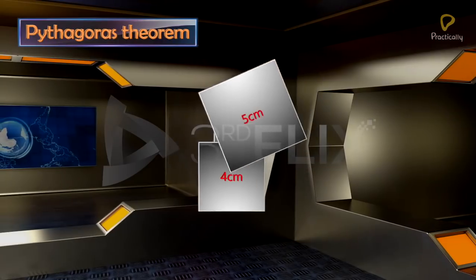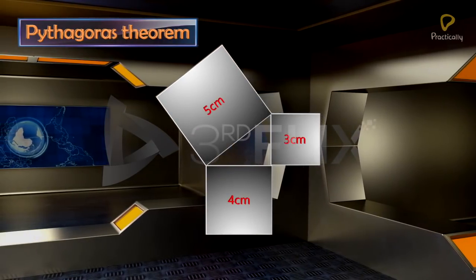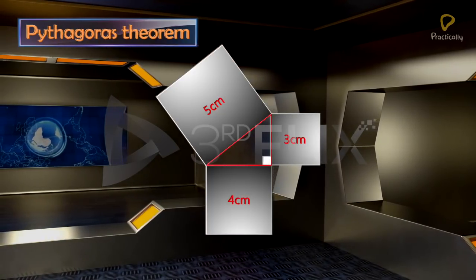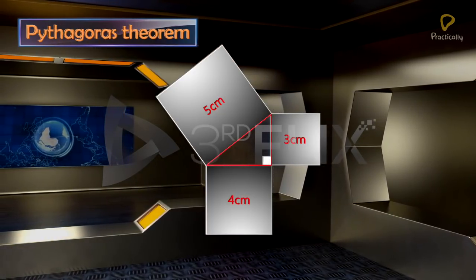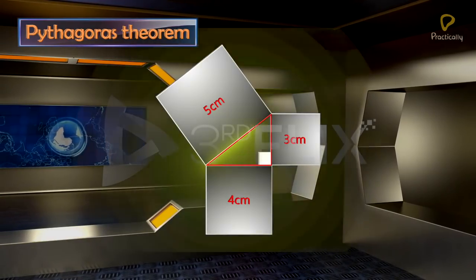Now join the three squares such that they form a triangle. Trace the triangle and measure its angles. Which type of triangle did we get? We get a right-angled triangle.